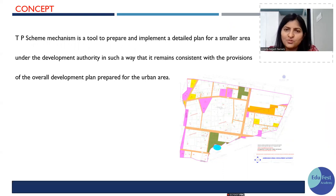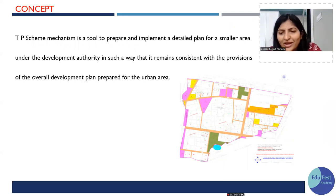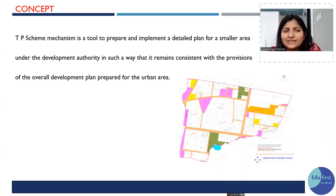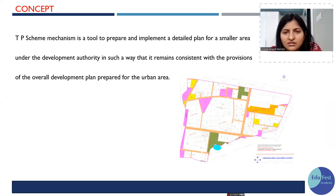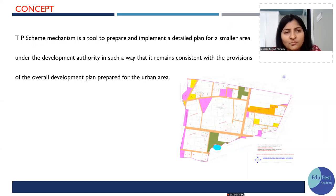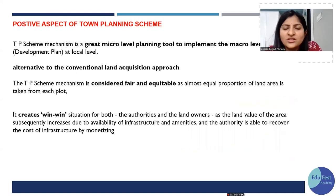Town planning schemes involve converting irregular-shaped plots into regular shapes while providing amenities and utilities. Town planning schemes are used to implement the development plan (DP) — wherever reservations are made in the DP, the TPS is the tool to implement them.